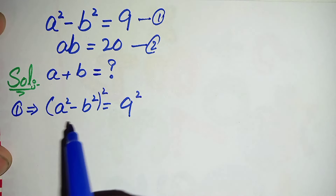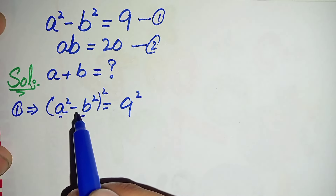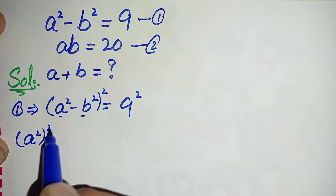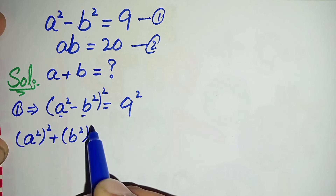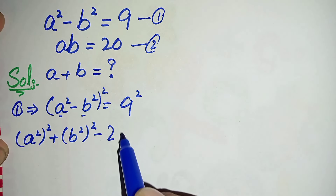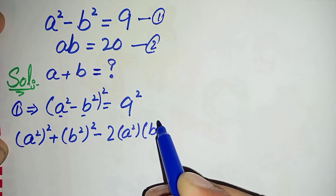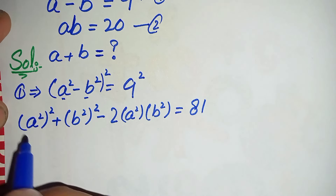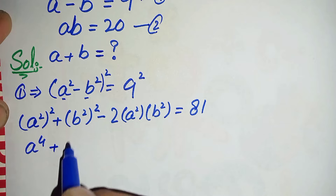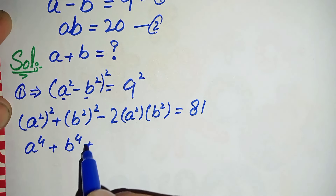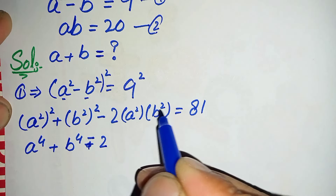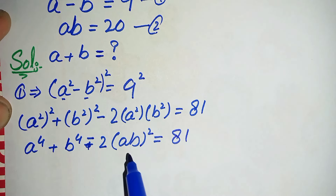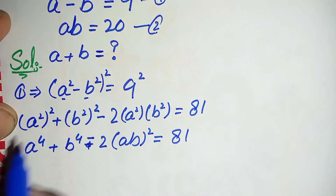On the left hand side we use the algebraic identity: (a - b)² = a² + b² - 2ab. So this becomes (a²)² + (b²)² - 2·(a²·b²) = 9² = 81. We then take the square common, giving a⁴ + b⁴ - 2·(ab)² = 81. Now we substitute the value of ab from equation two, which is 20.